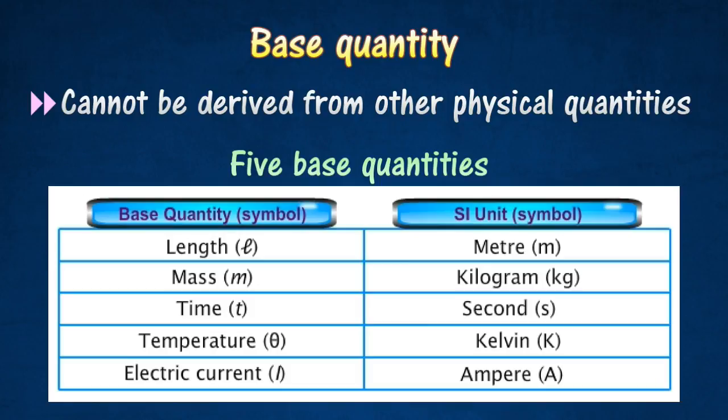The three base quantities that are used most often are length, mass, and time. The other two base quantities are temperature and electric current. Each base quantity has its own unique symbol.